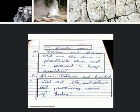Question 4. What are the places in Jharkhand where coal is produced in large quantities? Jaria, Bokaro and Giridih.